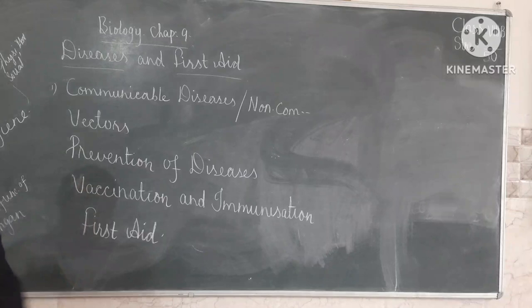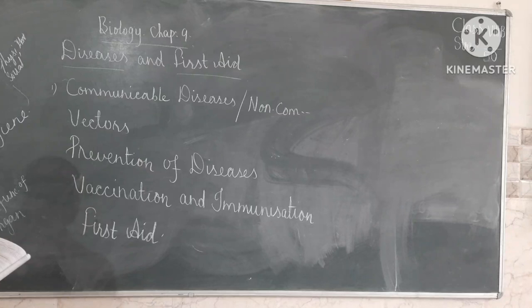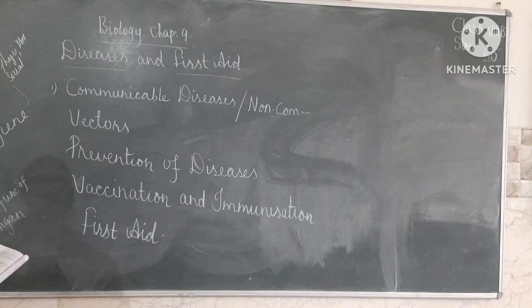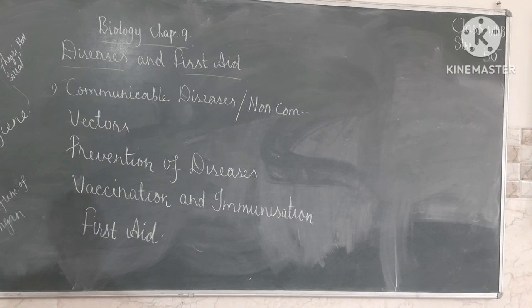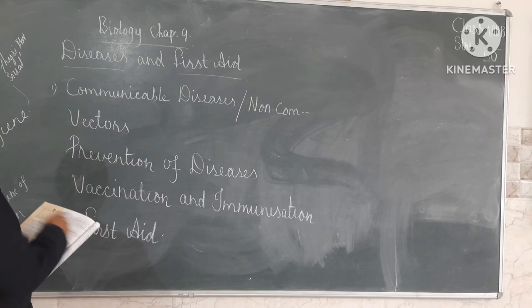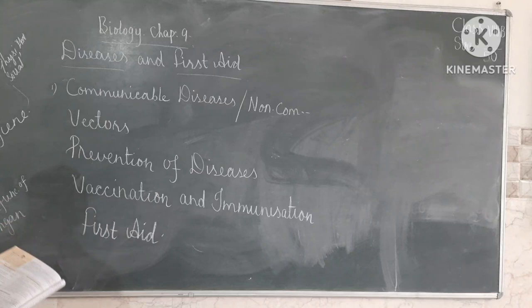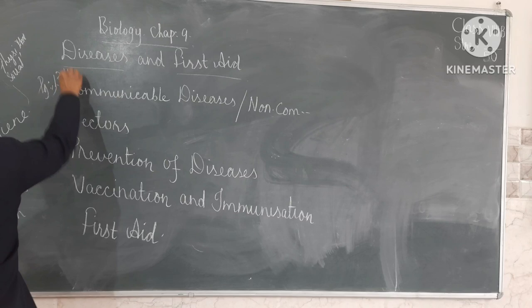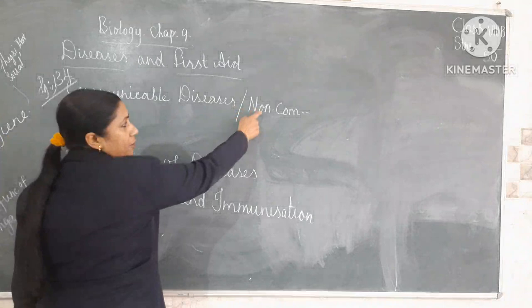Five differences are mentioned in Table 9.1. Communicable diseases are caused by microorganisms like bacteria and viruses. Non-communicable diseases happen because of the malfunctioning or abnormal growth of body cells or organs. Communicable diseases are transmitted from an infected person to a healthy person. This table shows the differences between communicable and non-communicable diseases with their examples, found on page 134.